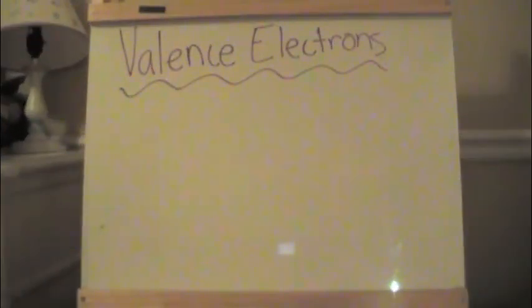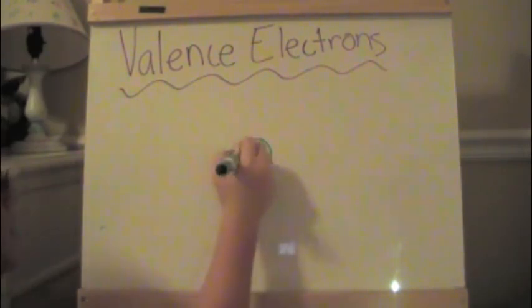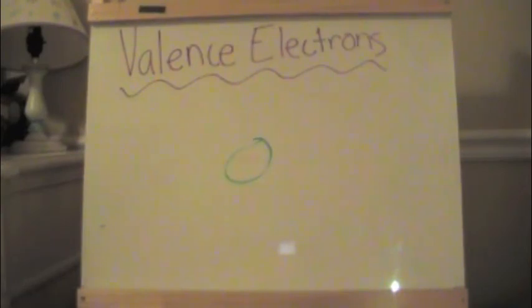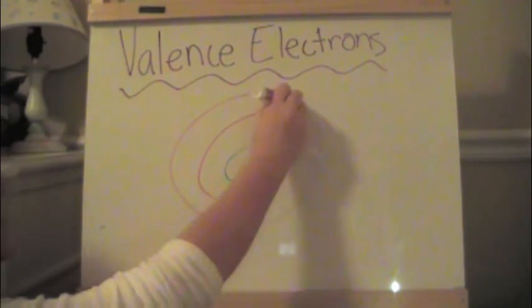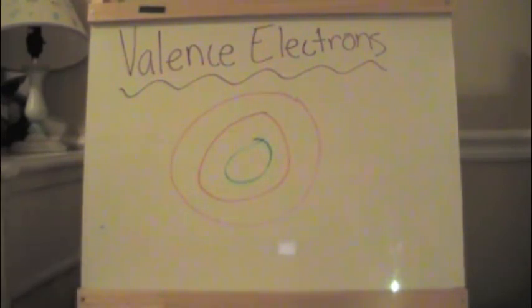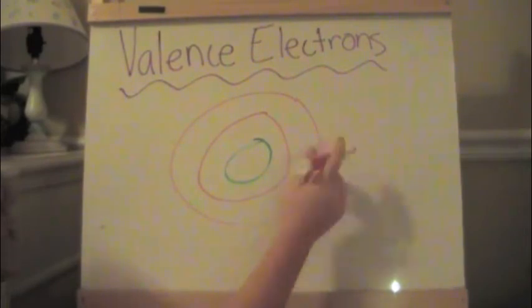So, valence electrons are the electrons that are in the outermost shell of an atom. Let's say here's the nucleus with all the protons and neutrons, and here are the electron shells. All of the valence electrons will be somewhere on this outer shell.